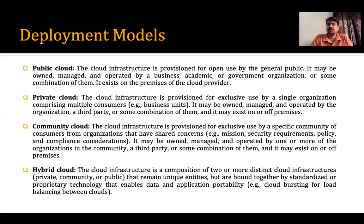Now let's look at another cloud deployment model, the hybrid cloud, which is very famous nowadays. The hybrid cloud is a combination of public and private cloud where the advantages of both are combined together into one cloud infrastructure. The cloud infrastructure is a composition of two or more distinct cloud infrastructures — maybe private, community, or public — that remain unique entities but are bound together by standardized technology that enables data and application portability.